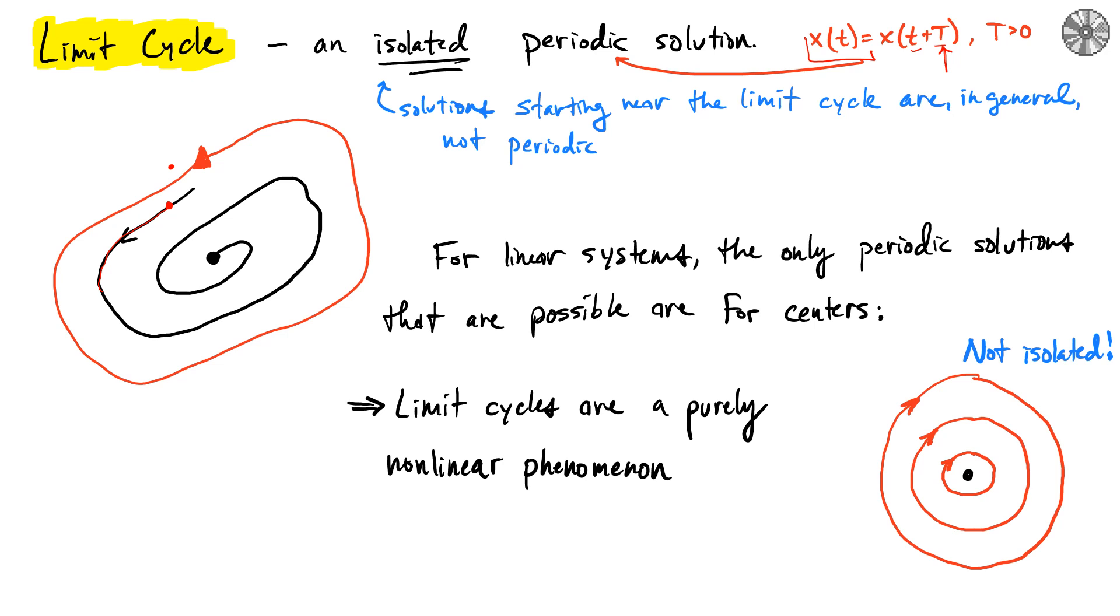You might be tempted to compare this to centers of linear systems, but the thing that they don't satisfy is that they're not isolated. Here, arbitrarily close to another periodic orbit is another periodic orbit that loops right around. You can find any arbitrary distance away from one of the others another periodic orbit. That does not satisfy the criterion of a limit cycle.